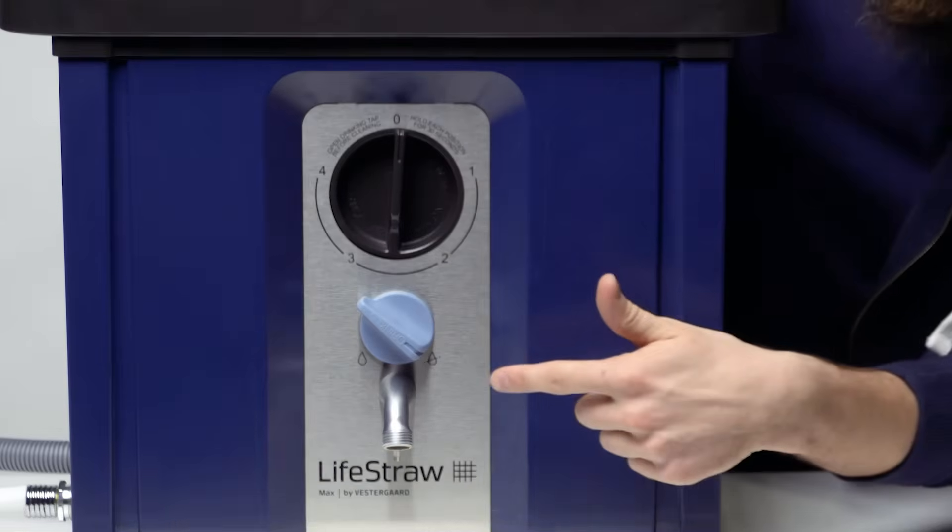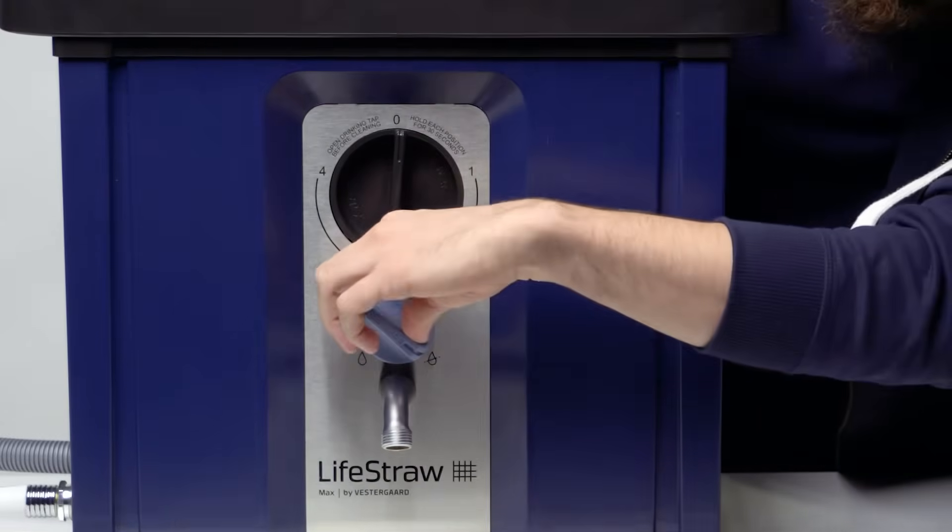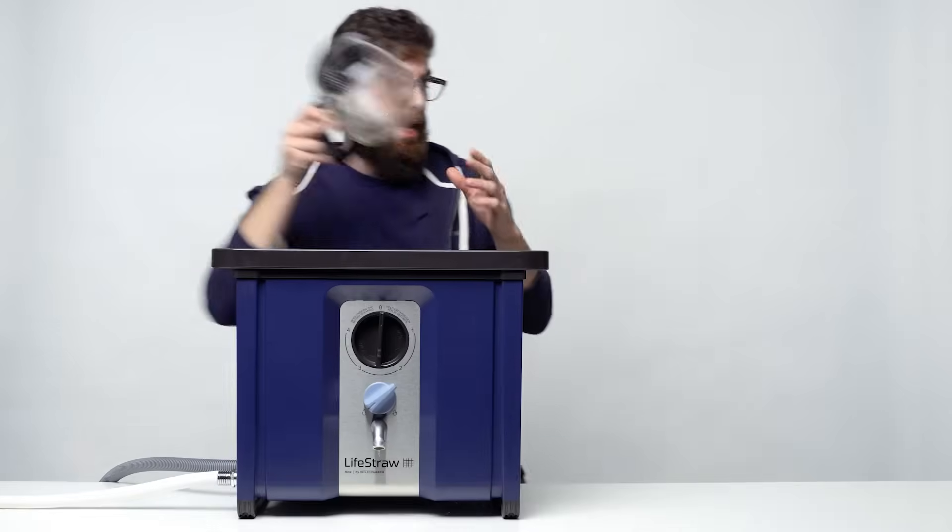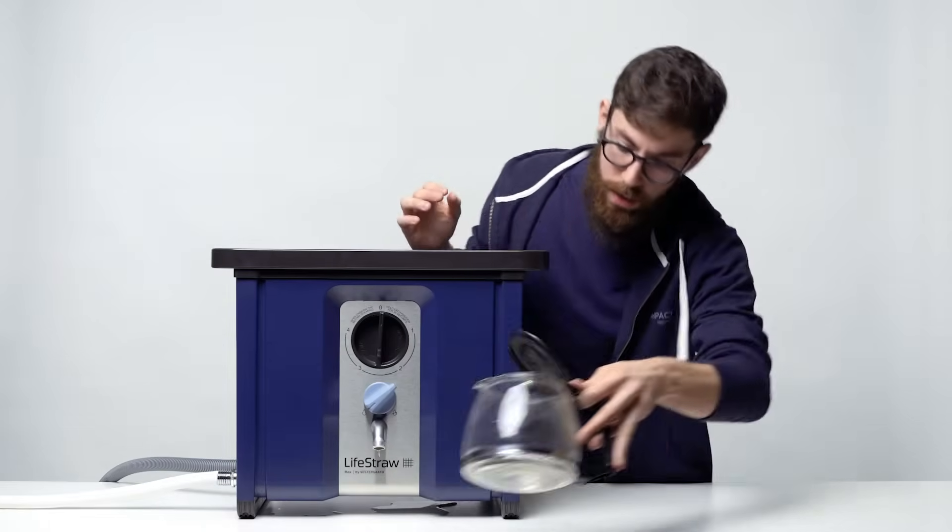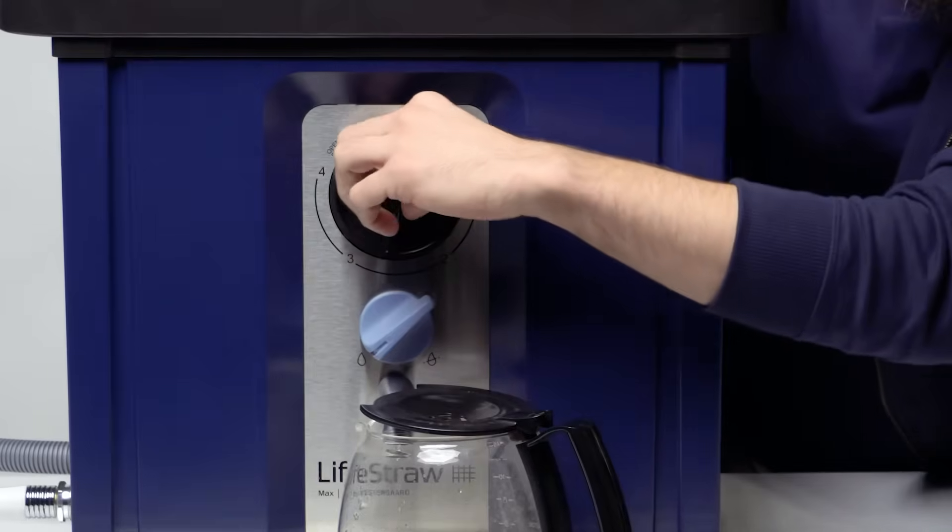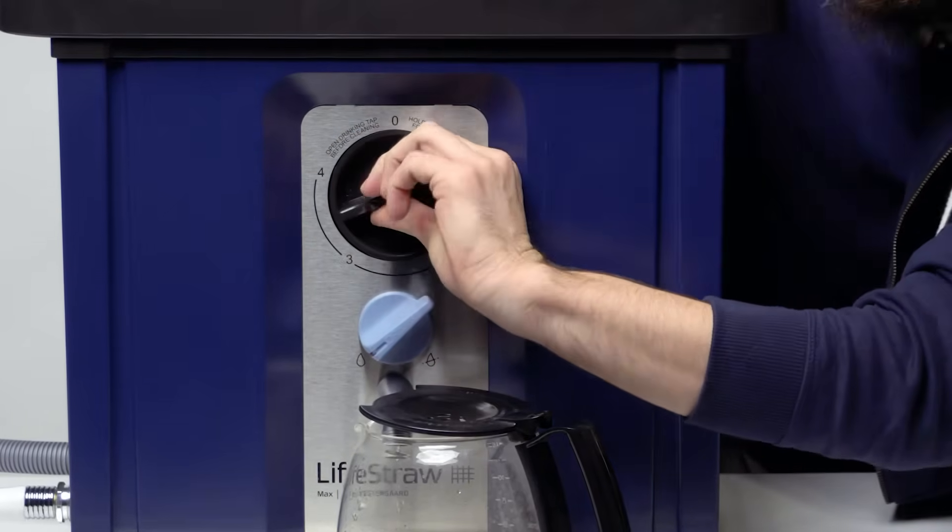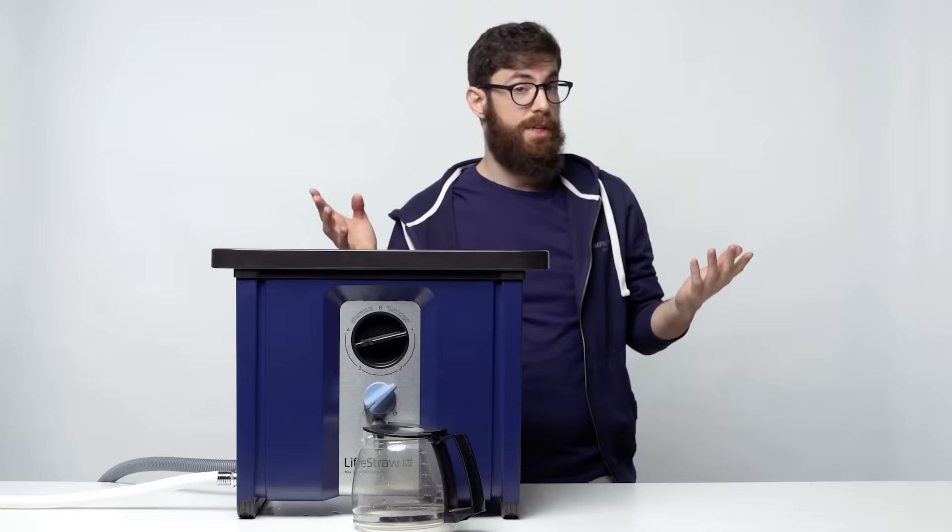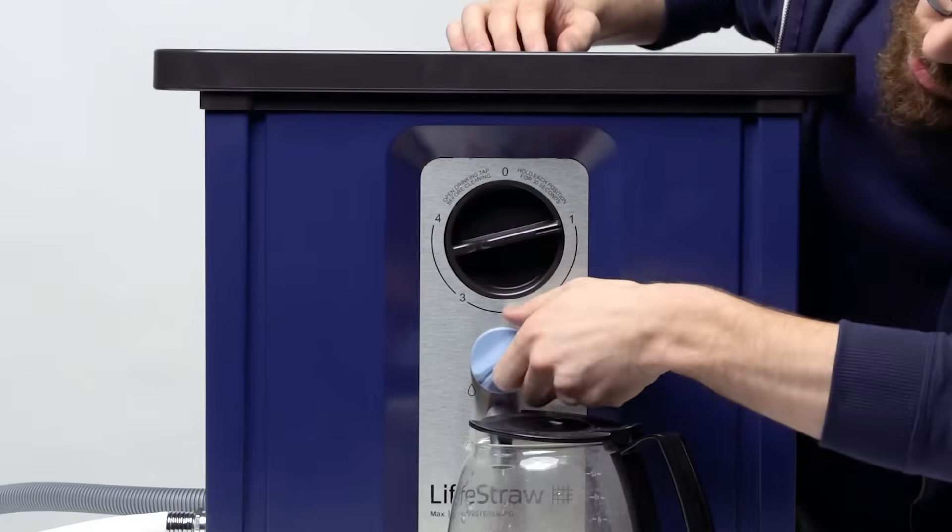On the front, make sure your drinking dial is set to open, have something to catch the first batch of water set under the tap, turn your backwash dial to position one, wait for 30 seconds, go to position two.